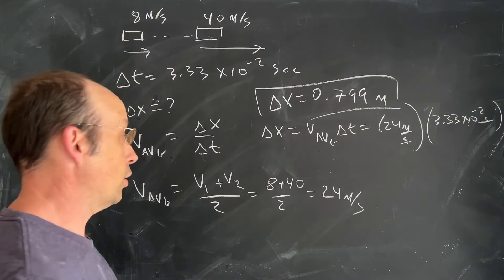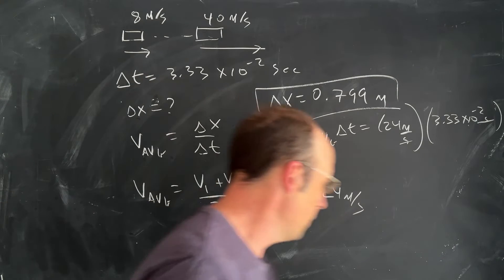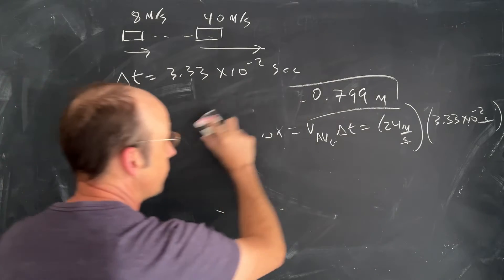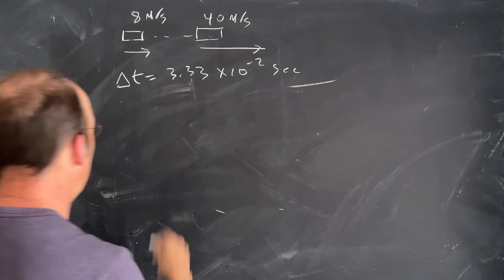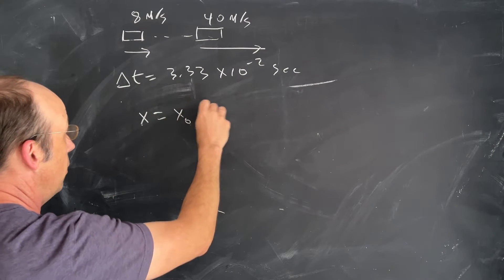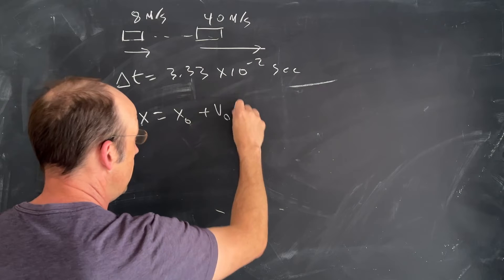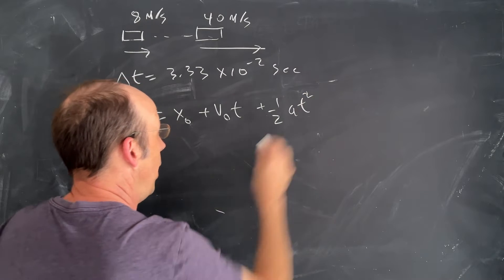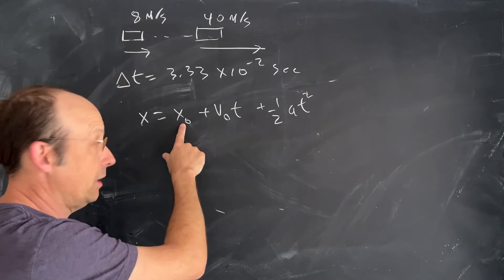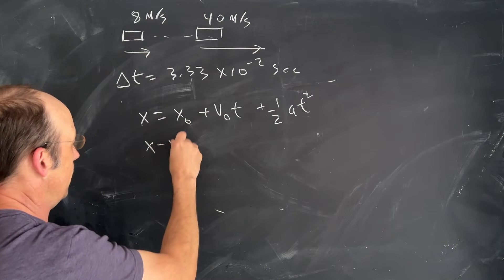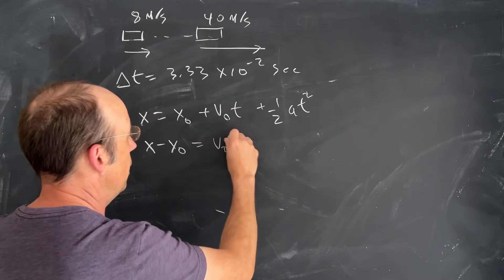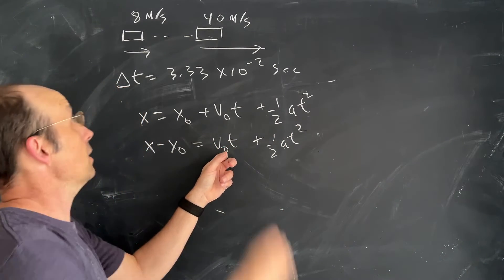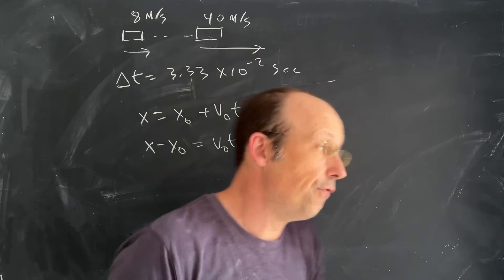Now, is there another way to solve this problem? Yeah, there is. So I could also use the following kinematic equation. I could say x equals x0 plus v0 t plus 1 half a t squared. So I could say it starts at x0 is equal to 0. I want to find x minus x0. That's my delta x. It's v0 t plus 1 half a t squared. And I know t, and I know the initial velocity is 8, but I don't know the acceleration. So I could find the acceleration.